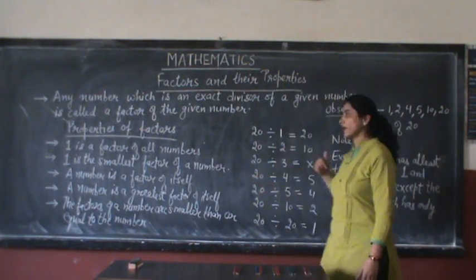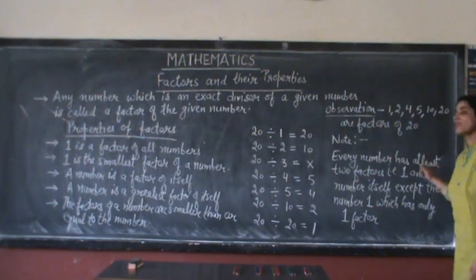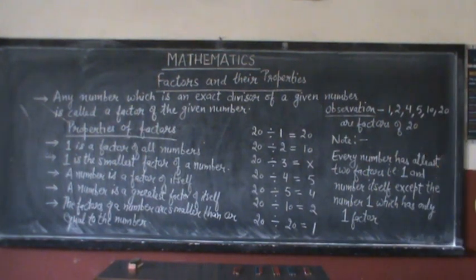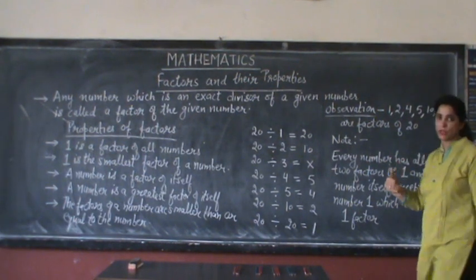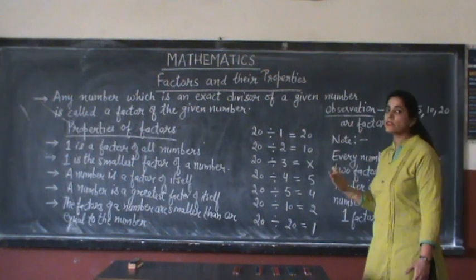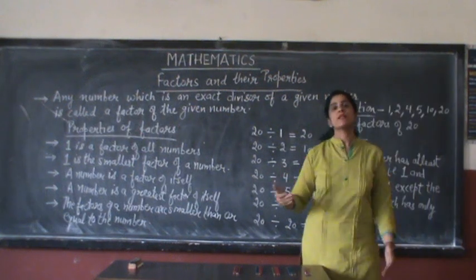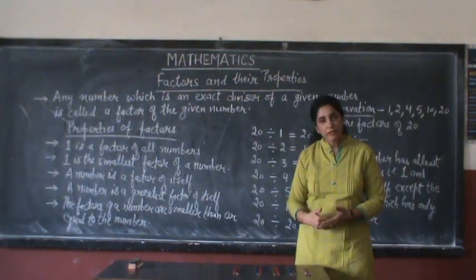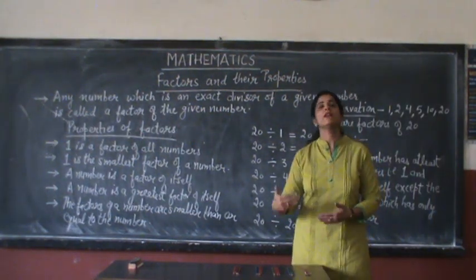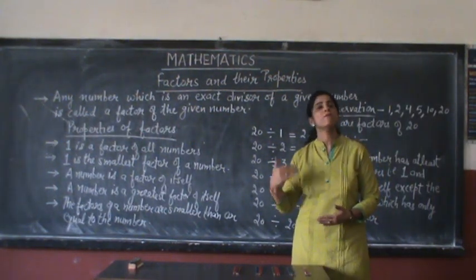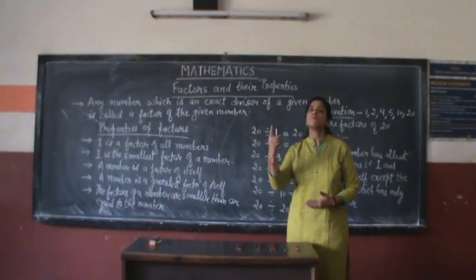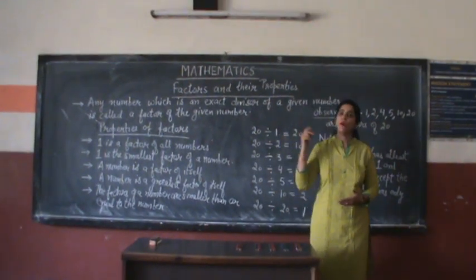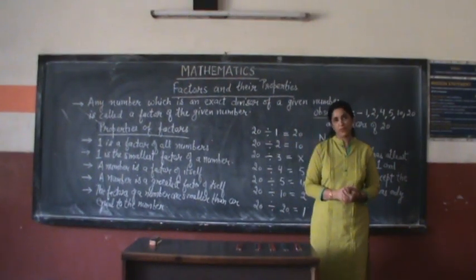Another thing you need to know is that every number has at least two factors — that is, one and the number itself — because every number is divisible by one and every number is divisible by itself, except for one, which has only one factor.